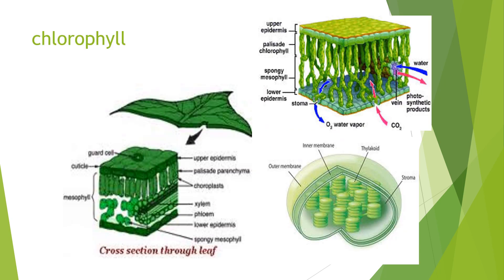We shall look into these factors individually. Chlorophyll is one of the major pigments present only in the green plants, which is involved in the process of photosynthesis. Let us look into the plant and find out where exactly this chlorophyll is located. This is the leaf. The leaf section is cut into a very small piece and then magnified. This magnified portion shows you what is inside the leaf.